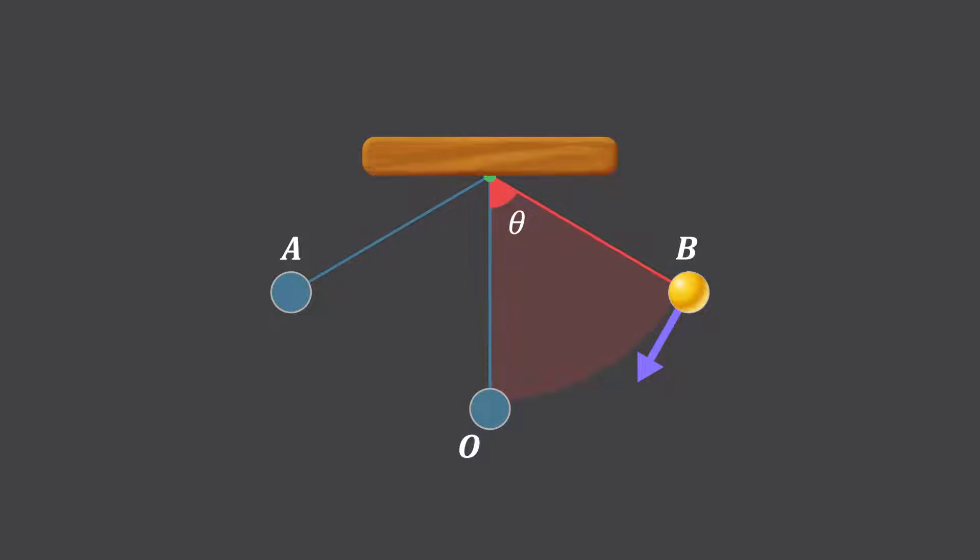At point B, the bob experiences the same forces as it did at point A. The force mg sin θ keeps trying to pull it back towards the mean position O. And so, the bob starts moving towards O again. This way, the bob keeps oscillating between points A and B about its mean position, point O.